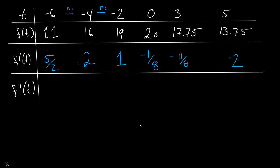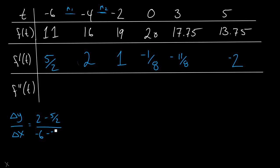Specifically, to calculate the second derivative at negative 6, I'm going to use the same delta y over delta x formula I used before, but I'm going to use the delta y between these two first-derivative points, keeping delta x the same. So delta y is going to be 2 minus 5 halves divided by negative 6 minus negative 4, which is negative 1 half over 2, or negative 1 quarter. That will be my value there.